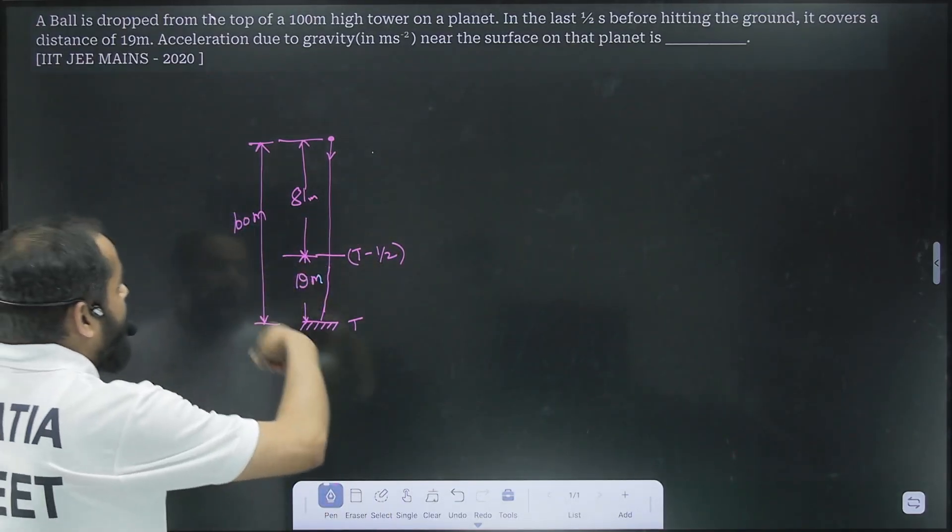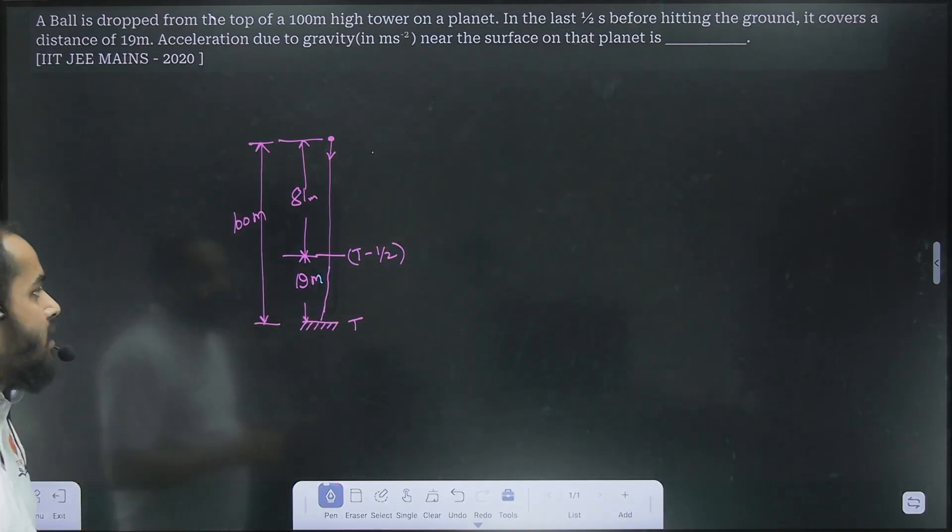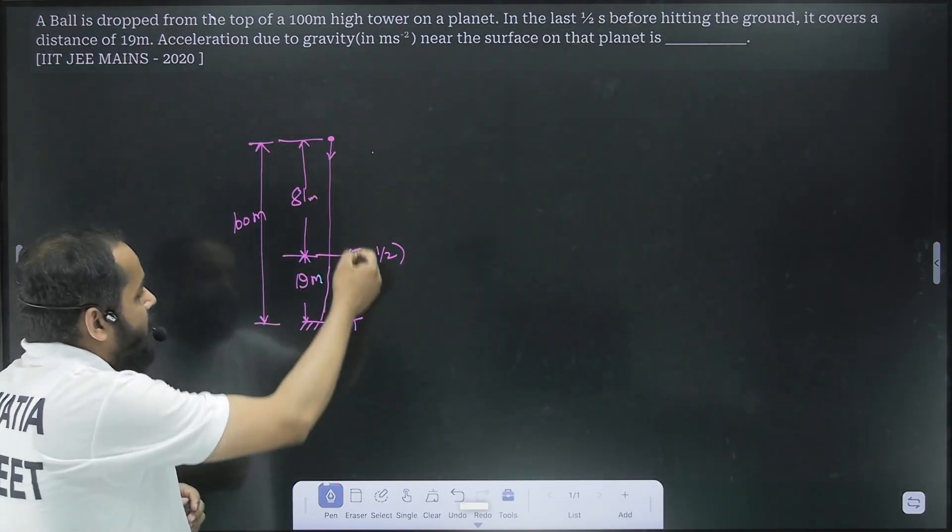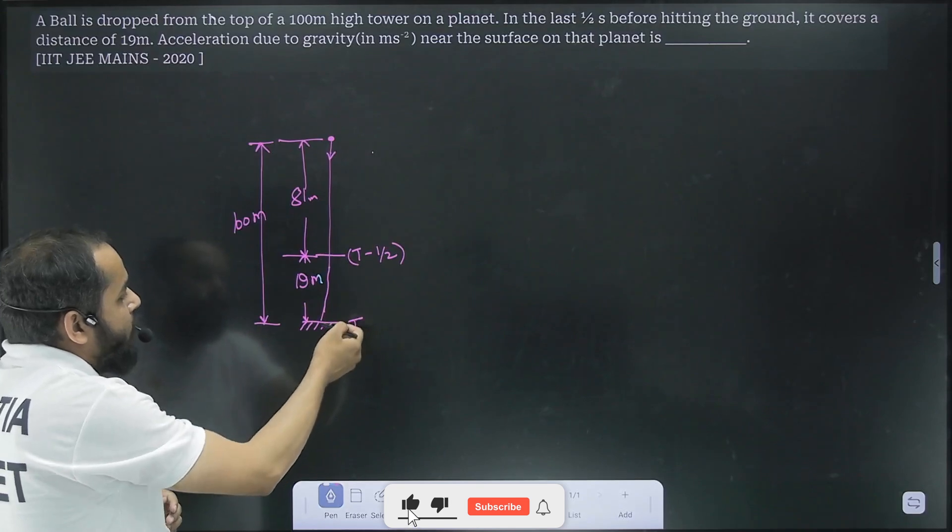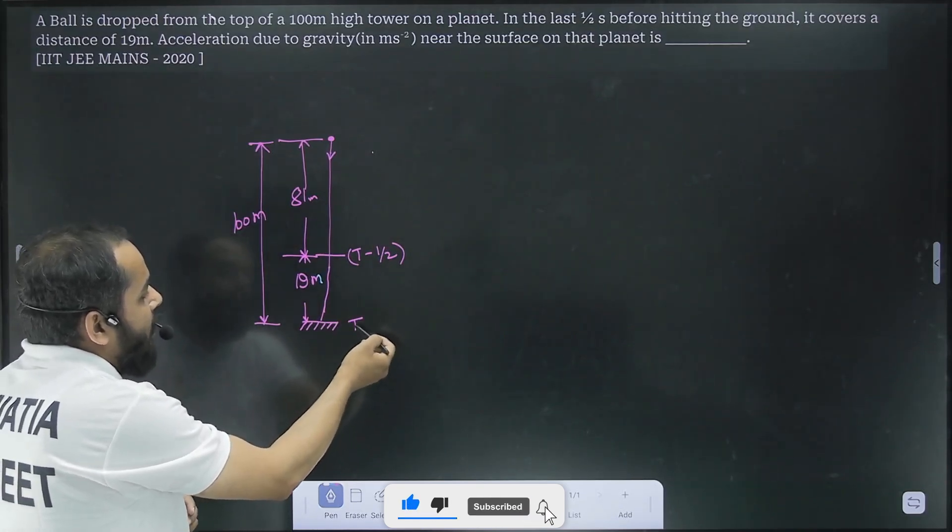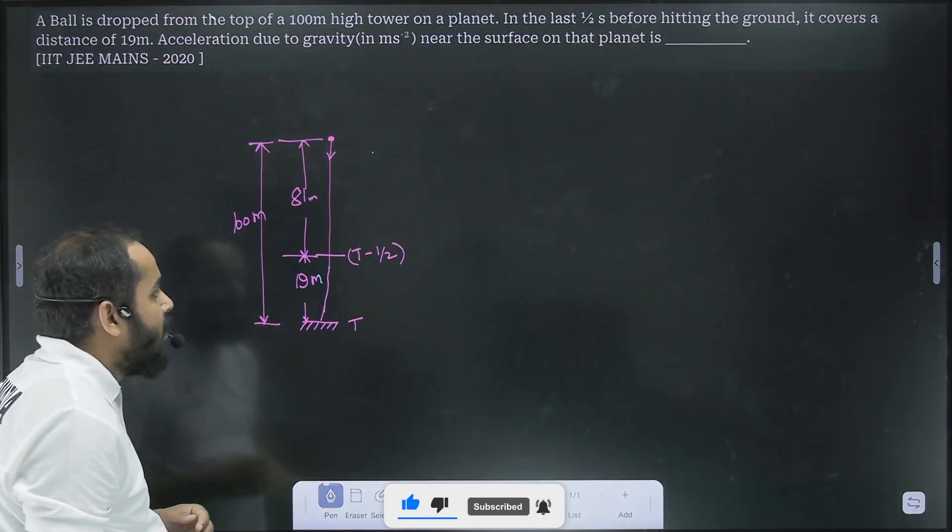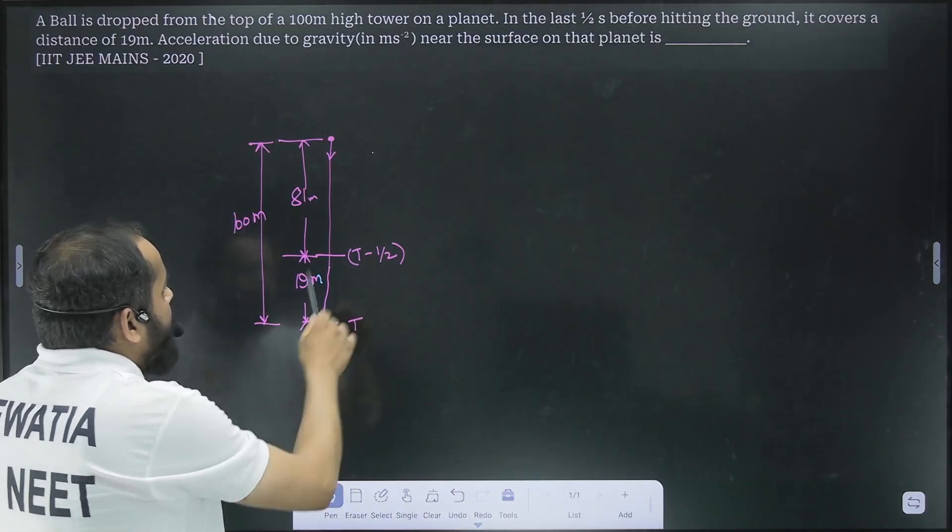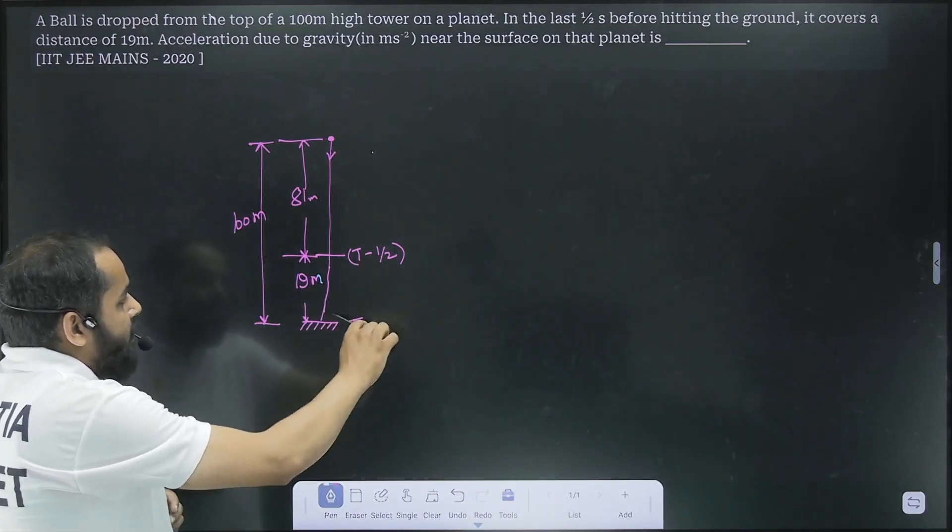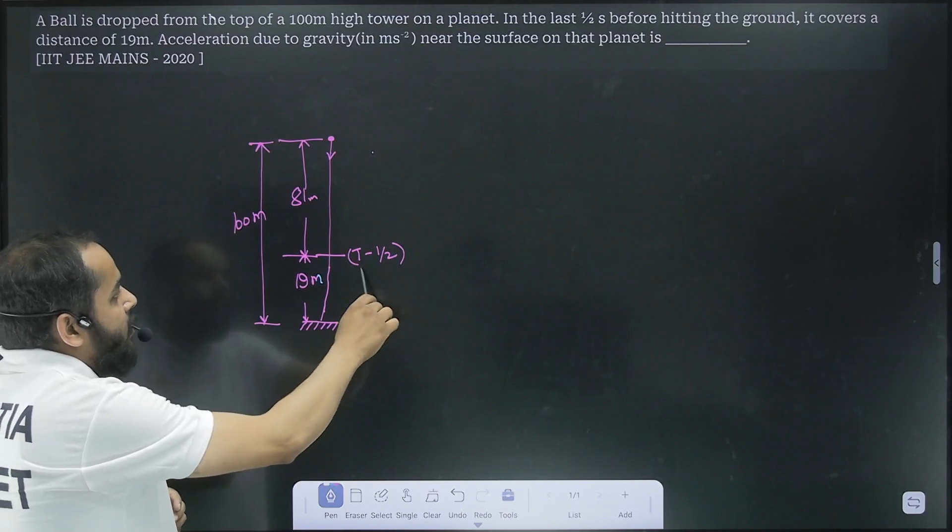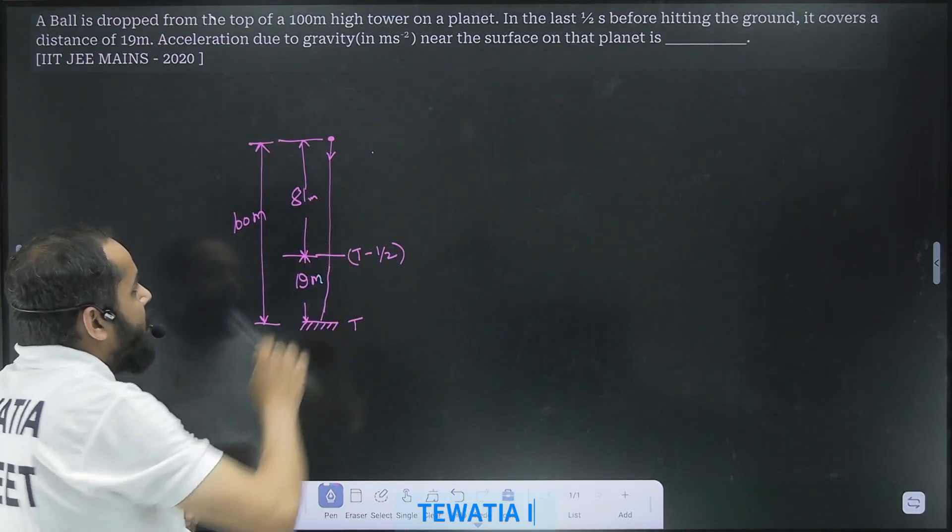I have drawn this diagram here to visualize the question. Let's assume the total time it takes to fall to the ground just before it hits the ground, the total time is capital T. So in t minus half, in the last half second it travels 19 meters, so in t minus half it travels 81 meters.